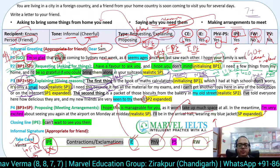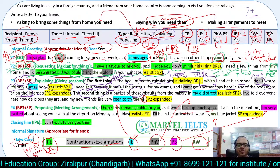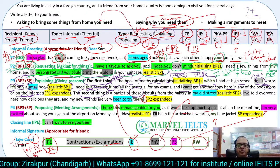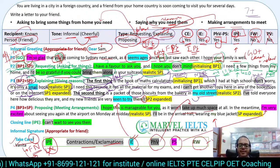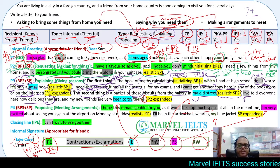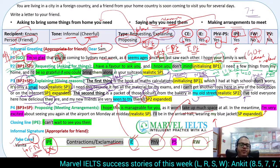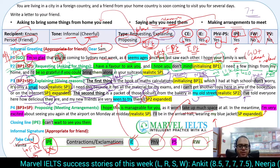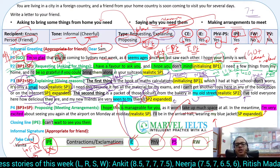The second thing is a packet of those biscuits from the bakery in my old street. You explain how delicious they are — 'they' is a reference word for biscuits — and say that your new friends are very keen to try them, where 'them' again refers to the biscuits. So you have varied your reference words: 'biscuits', 'they', 'them'. 'Keen to try' is an informal expression. You have also given a reason for wanting the biscuits — your new friends want to taste them.